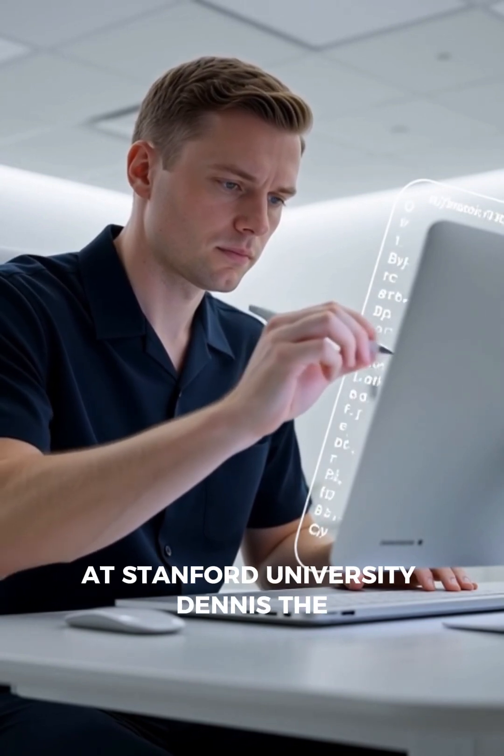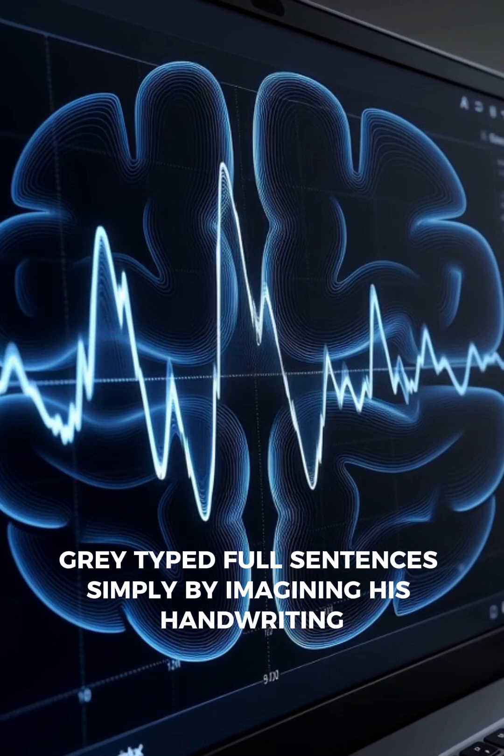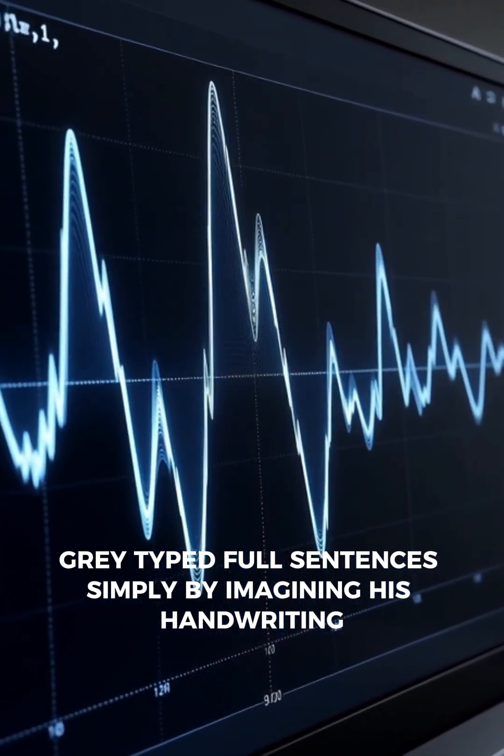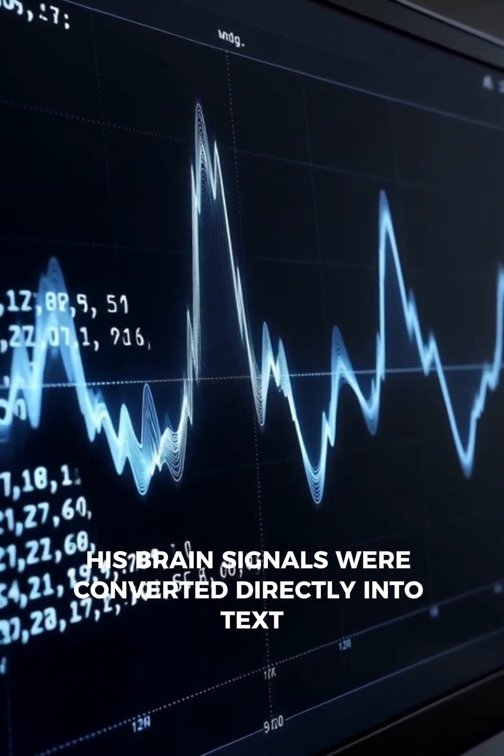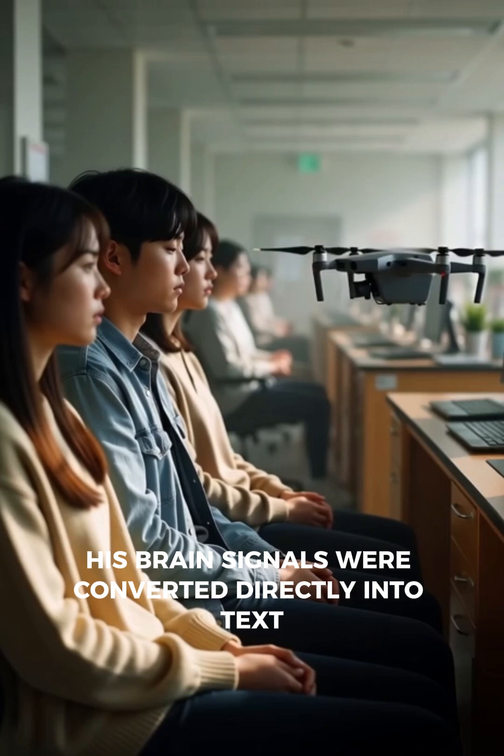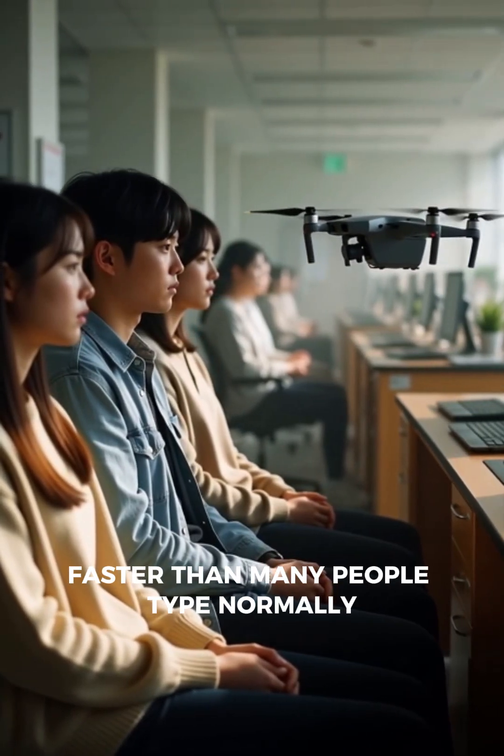At Stanford University, Dennis de Grey typed full sentences simply by imagining his handwriting. His brain signals were converted directly into text, faster than many people type normally.